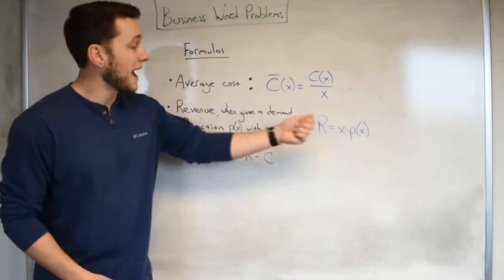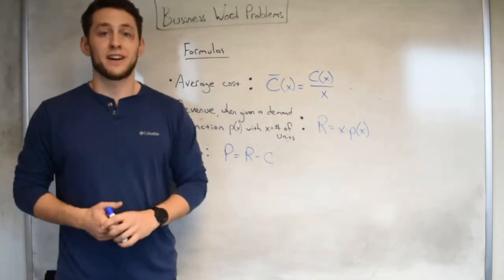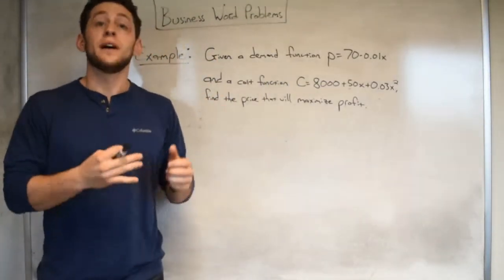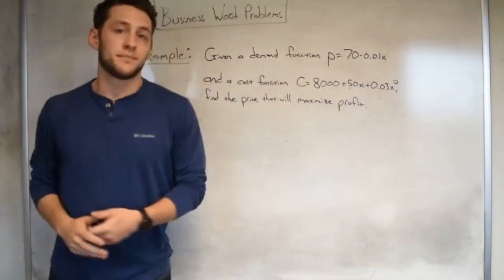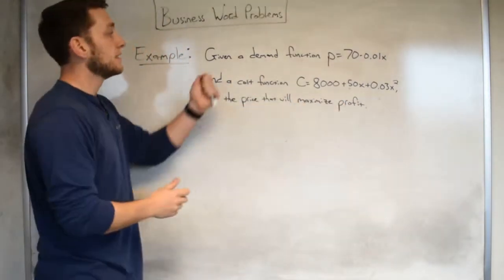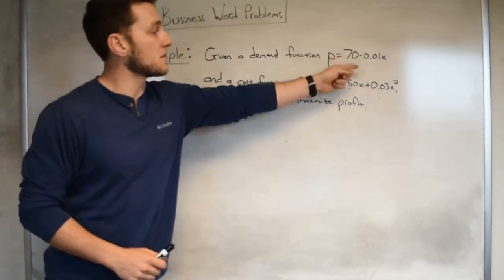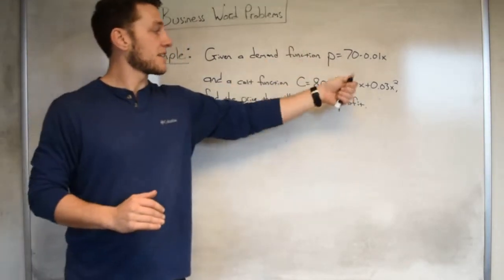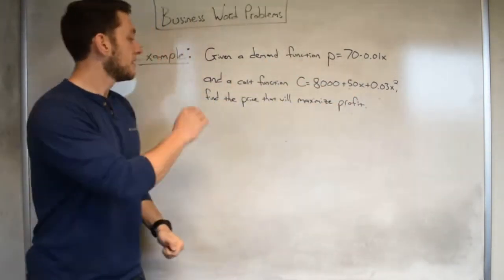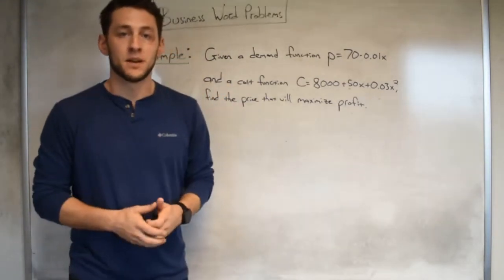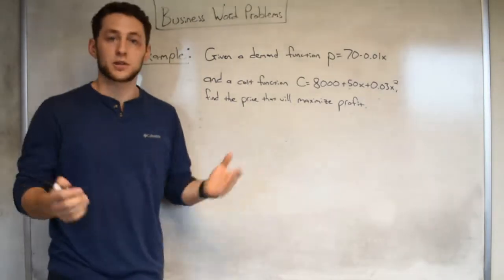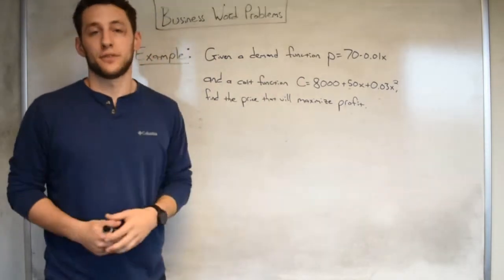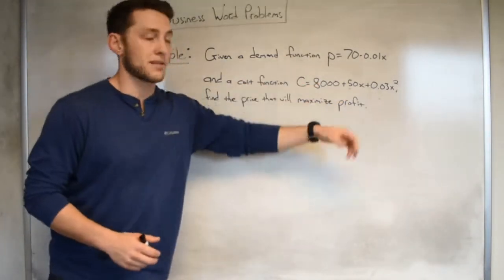Like I said, these will all be useful because once we have a function in terms of one variable, we know how to find the max or the min. Let's start with an example that goes ahead and combines both demand, revenue, and cost all in the package of profit. Here's the example: given a demand function p equals 70 minus 0.01x and a cost function C equals 8,000 plus 50x plus 0.03x squared, find the price that will maximize profit.